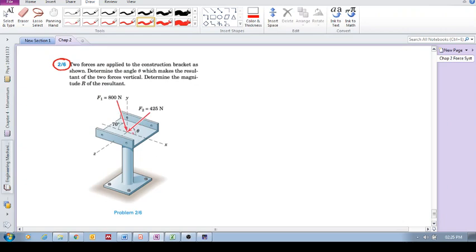but we want the resultant of these to be only vertical, meaning there's going to be no resultant horizontal component. And then determine the magnitude of the resultant.